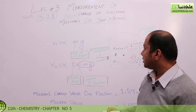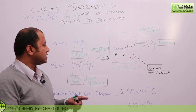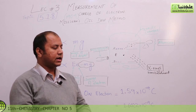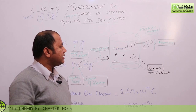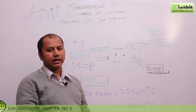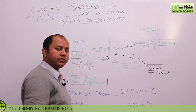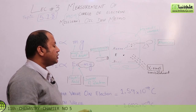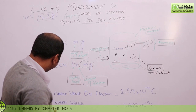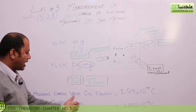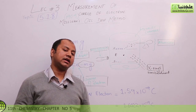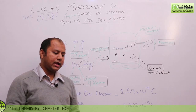Millikan's key contribution was that he adjusted the electrical field in such a way that the particle was suspended — held stationary. This meant the electrical force exactly balanced gravity. He observed this through a microscope, and from this experiment he determined the minimum charge value on the electron, which is 1.59 × 10⁻¹⁹ coulomb.